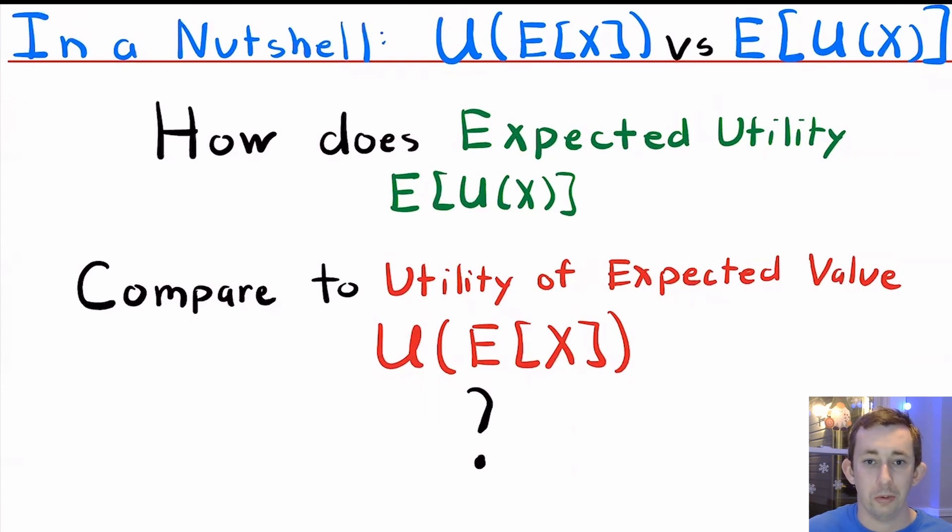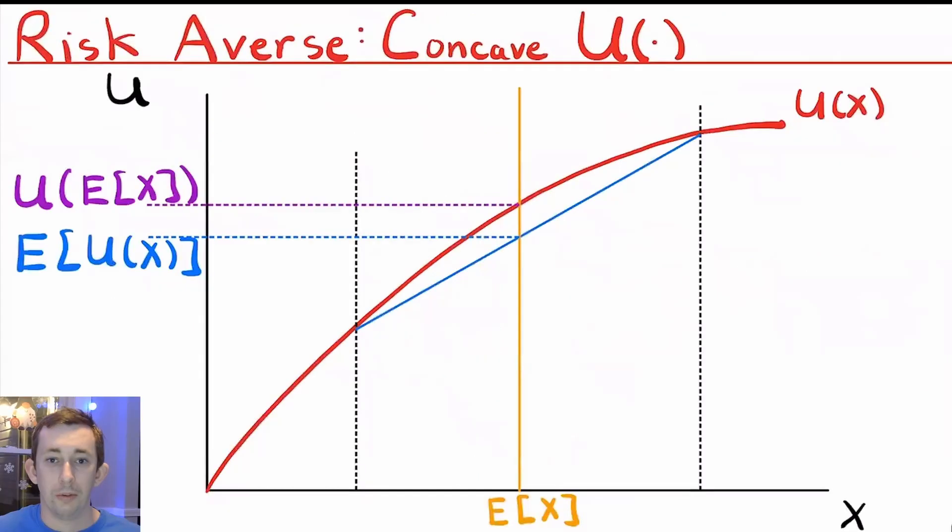We're going to start with a risk averse person. So a risk averse person, we know they have concave utility that looks maybe something like this red line here. The gamble that each of our three players are going to face is going to be a 50% chance of winning this amount here, a 50% chance of winning this amount here, which gives an expected value of the gamble here.